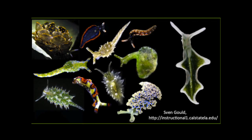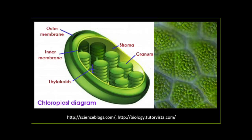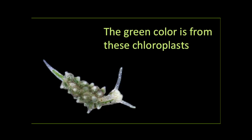The last group I'm going to talk about today are the sacoglossans, a group of slugs that suck the cell sap out of algae cells and digest everything except for the chloroplasts. Chloroplasts are where photosynthesis takes place. Sacoglossan slugs ingest these chloroplasts from their algal dinners, store them in their bodies, and the chloroplasts don't seem to care too much — they just keep right on photosynthesizing and making energy. At least we think so, but we don't really know, and that's what my PhD project is about.